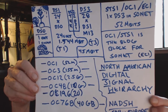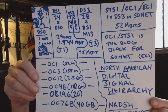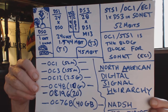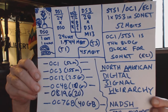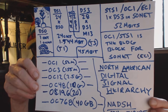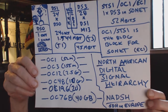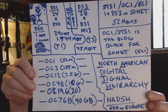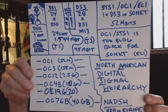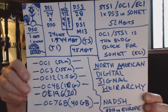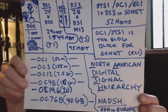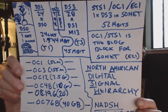What we're doing there is adding overhead so that switching functions, virtual concatenation functions, communications, handshaking, and other things can go on. This is the North American digital signal hierarchy — this is how all the channels are multiplexed together so they can transport large amounts of data over small pipes.